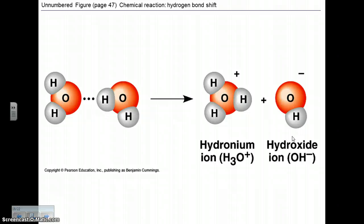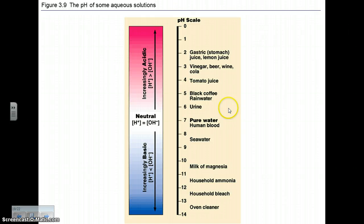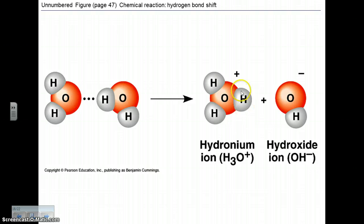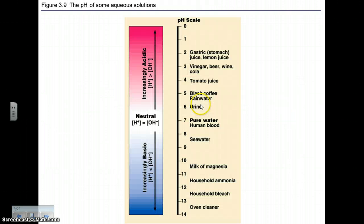Now, do you recall what the pH of a solution is where these two ions are equal to each other? Well, that's basically a neutral solution. Any time you have more of the H-plus or the hydronium, any time you have more of the positive ion, the hydronium, you're going to have an acidic solution. And any time you have more of the hydroxide, you're going to have a basic solution. And obviously, when you add acids to solutions, they become acidic. And when you add bases, they become basic or alkaline.